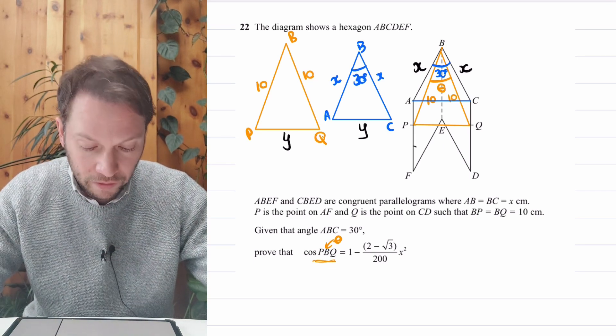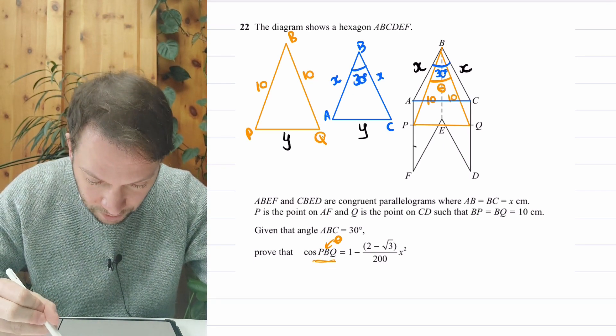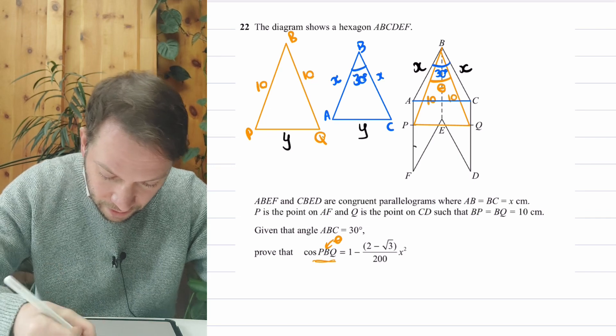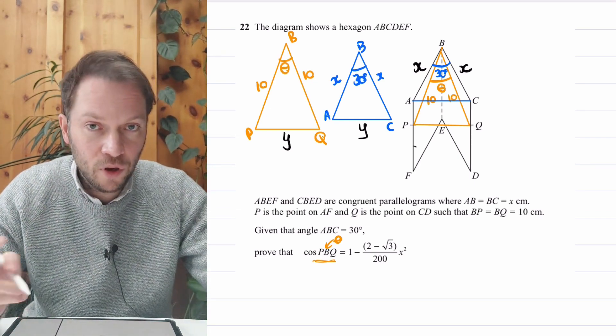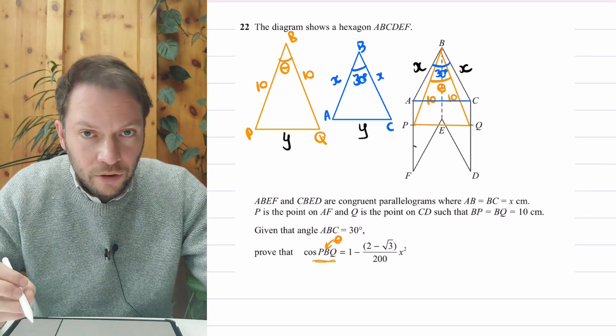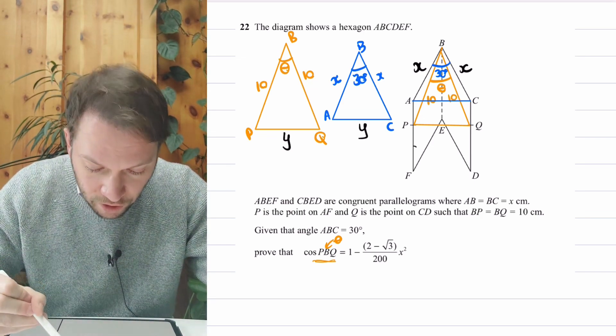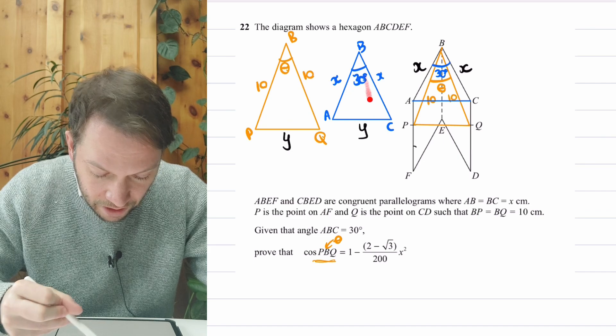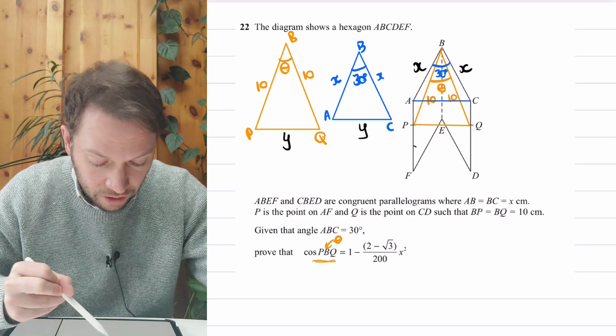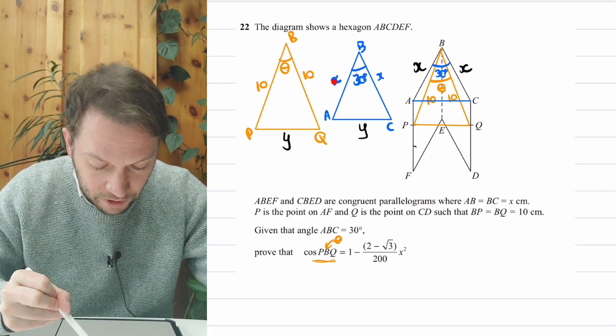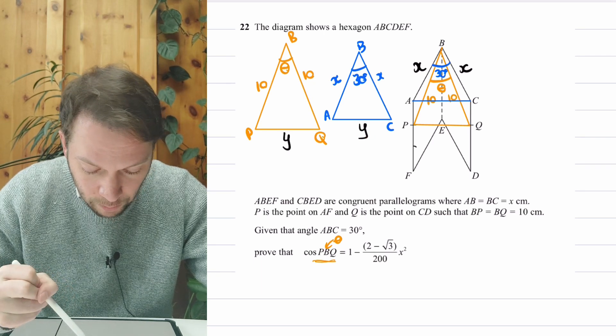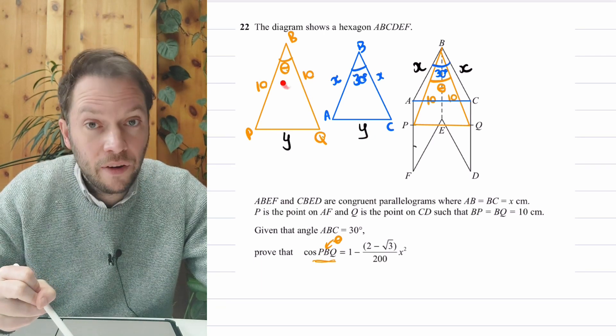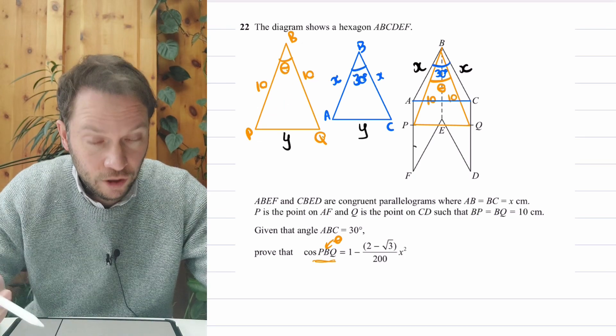And remember, we're trying to find cos of theta. So let me put the theta in here. This angle here we said was theta. So we're trying to find cos of that angle. So it might help to start with the triangle on the right first, this one, ABC, because that's going to give us an expression for Y in terms of X. And then once we've got this Y, an expression for Y, we can use this triangle to then find an expression for the theta, for cos of theta.